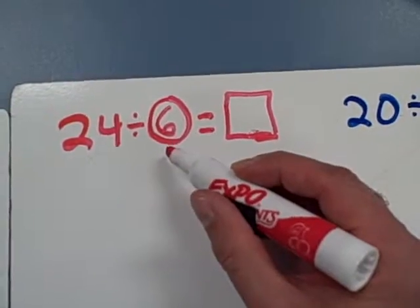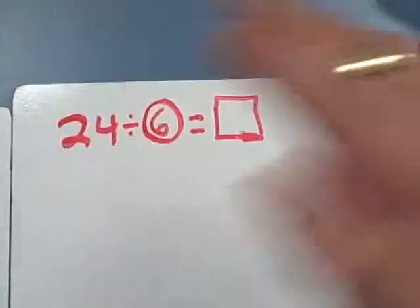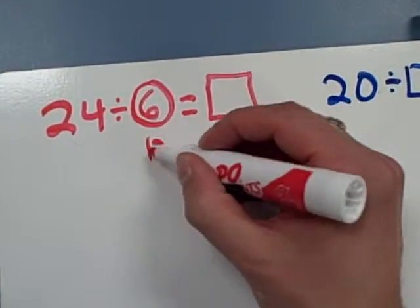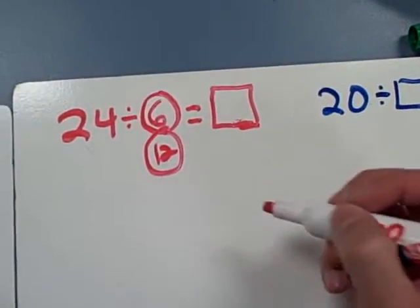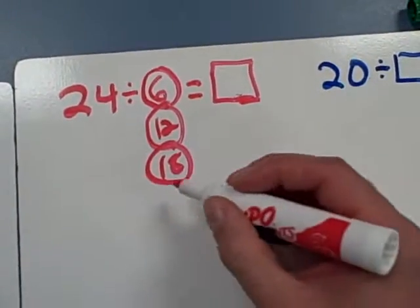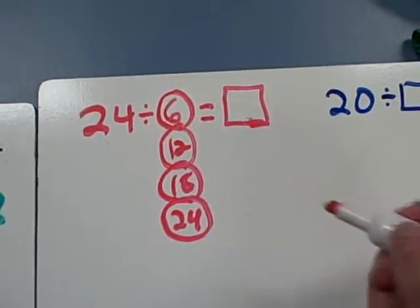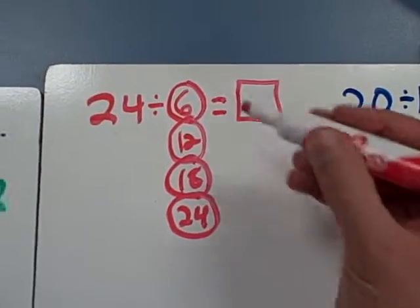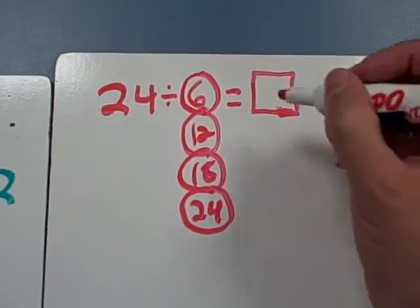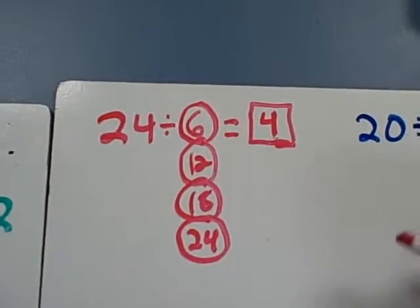One group of six. Two groups of six is seven, eight, nine, ten, eleven, twelve... [counting continues to 24]. So if you use your fingers and count bys and then write down the numbers, you can see that four is the answer, four groups of six.